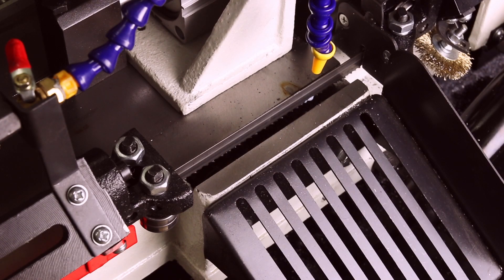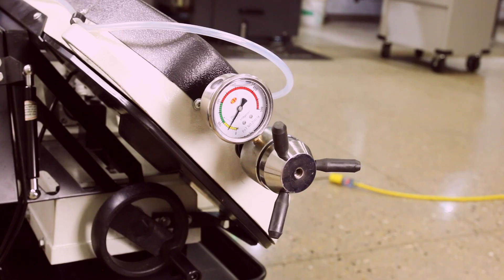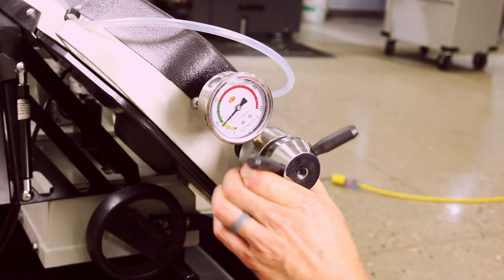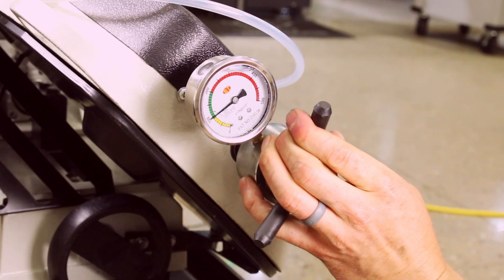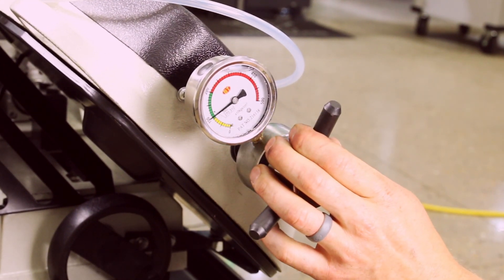Your bandsaw will arrive with one saw blade installed, but you must make sure it is set to the correct tension. Turn the tensioner until the tension is at 100 kilograms.